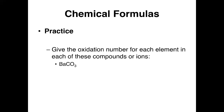So plus 2 minus 6 plus something equals 0, and you can easily figure out that that something has to be plus 4. So barium has an oxidation number of plus 2, carbon plus 4, and oxygen minus 2. Now when you have a polyatomic ion, you remember that the oxidation numbers have to add up to equal the charge of the ion, which in this case is minus 2. Oxygen again is minus 2, so 3 times minus 2 is minus 6. So whatever sulfur is, plus minus 6 has to equal minus 2. Sulfur in this case has to be plus 4.